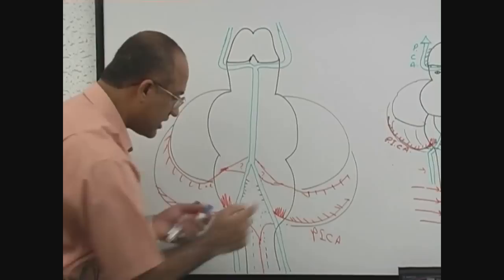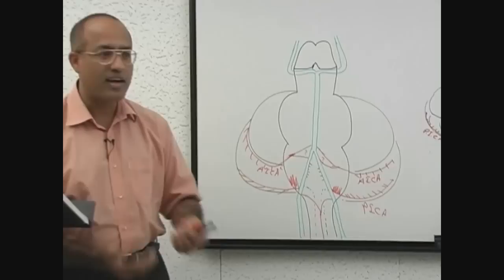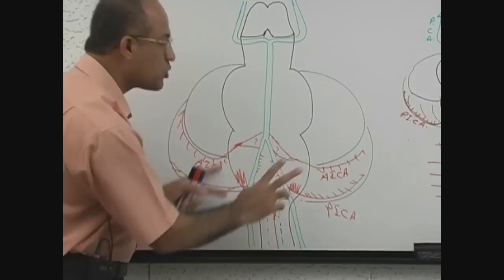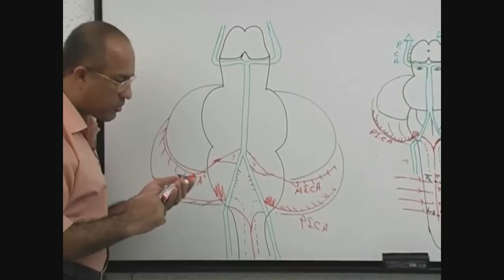So if posteriorly was posterior inferior cerebellar artery, then anterior should be called anterior inferior cerebellar artery. So this is PICA and that is AICA - I think they are like sisters, PICA and AICA. Both are supplying the undersurface of cerebellum.